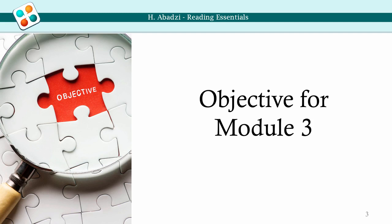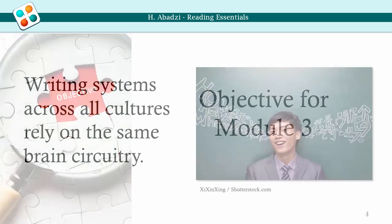By the end of this module, you will be able to explain how the brain identifies letters, which visual variables influence early grade reading, and how to make instruction more efficient.